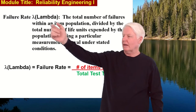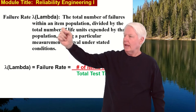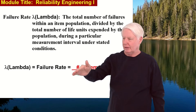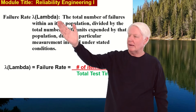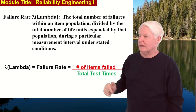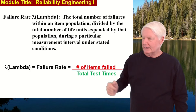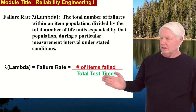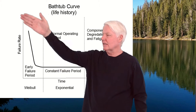Failure rate, or lambda — we call it lambda because we symbolize failure rate with the letter from the Greek alphabet. The reason I'm telling you about failure rate is because that's the vertical axis on the bathtub curve, and the x-axis, or horizontal axis, is time. Failure rate equals the number of items that failed, usually during a reliability test, divided by the total test time. And that is the y-axis.